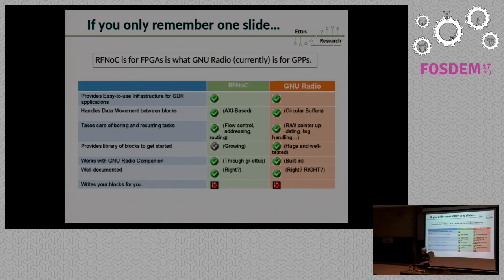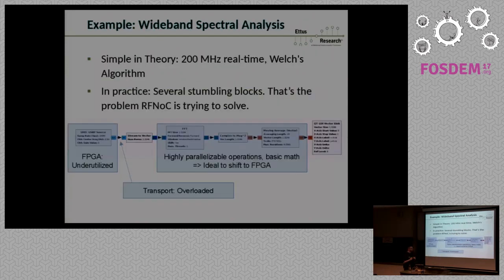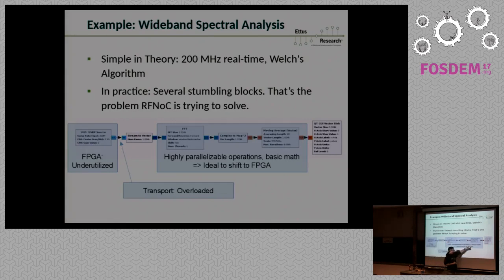We like working together with GNU Radio. Here's an example of a GNU Radio application that would simply not work, even though it's very simple: you generate data from your SDR, stream it to the computer, then calculate a 1024K FFT, a complex symmetric moving average, and plot it. This is DSP 101-level spectrum estimation. Already this won't work if you have high bandwidth.